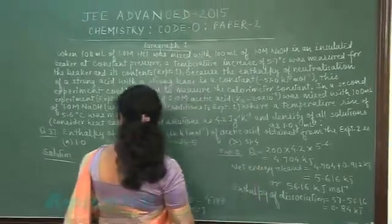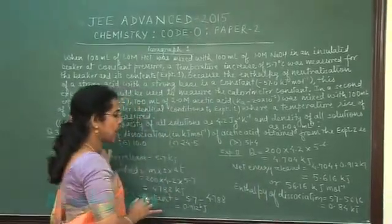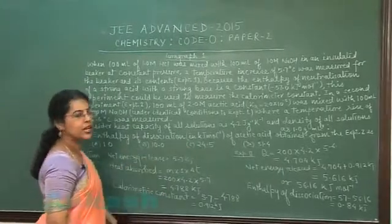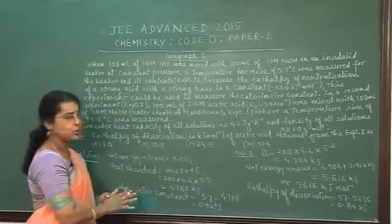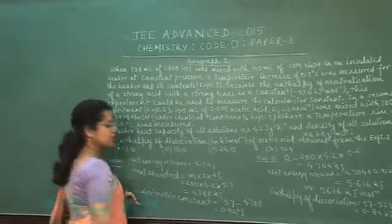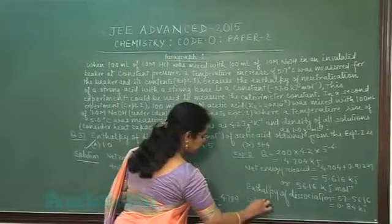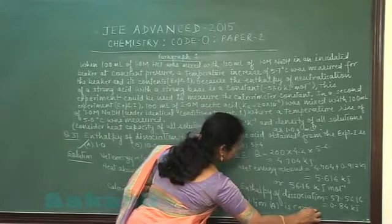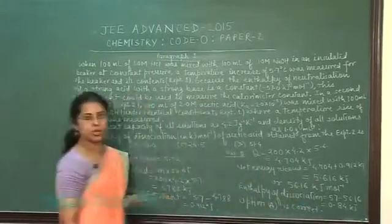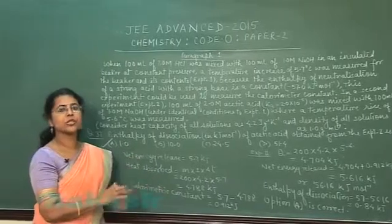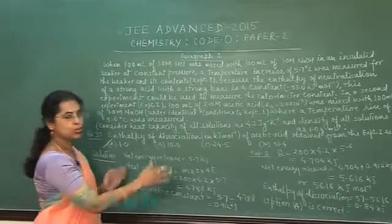Now in the options, the first option is having approximately same value while other options are having very different values. So we can say that first option, that is option A, is correct. So option A is correct answer of the question. On the basis of paragraph, information given in the paragraph, we can solve the question.